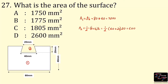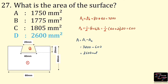Here the trapezoid is removed from the rectangle. So the total area is A1 minus A2: 3,200 − 600 = 2,600 mm². The answer is option D, 2,600 mm².